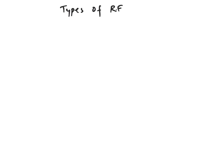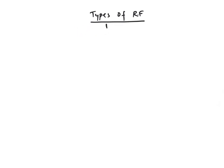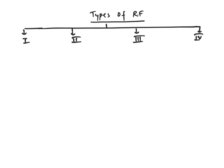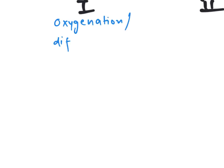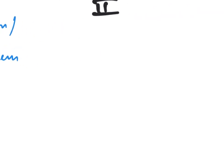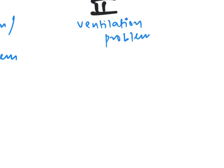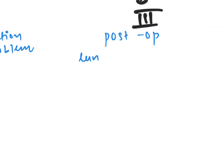Respiratory failure can be classified into two ways. It can be classified into type 1, 2, 3, and 4. Type 1 respiratory failure includes an oxygenation or diffusion problem. Type 2 is a ventilation problem. Type 3 is post-op lung atelectasis. And type 4 is hyperperfusion of respiratory muscles.